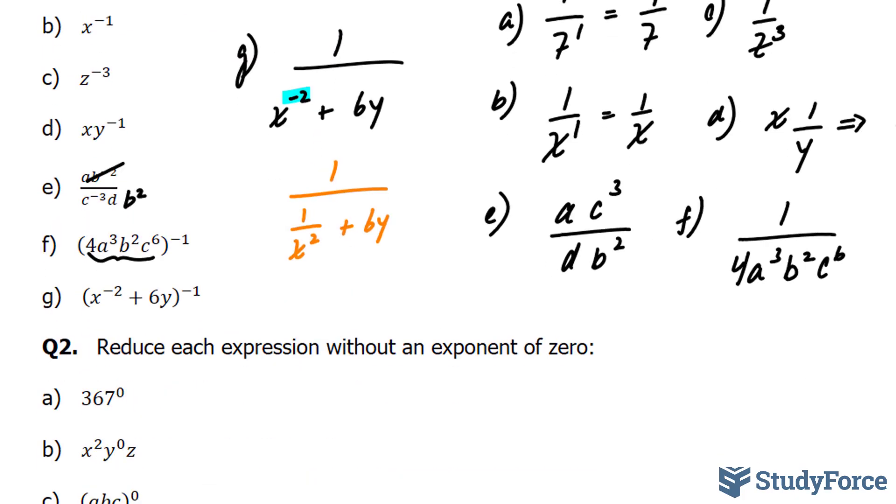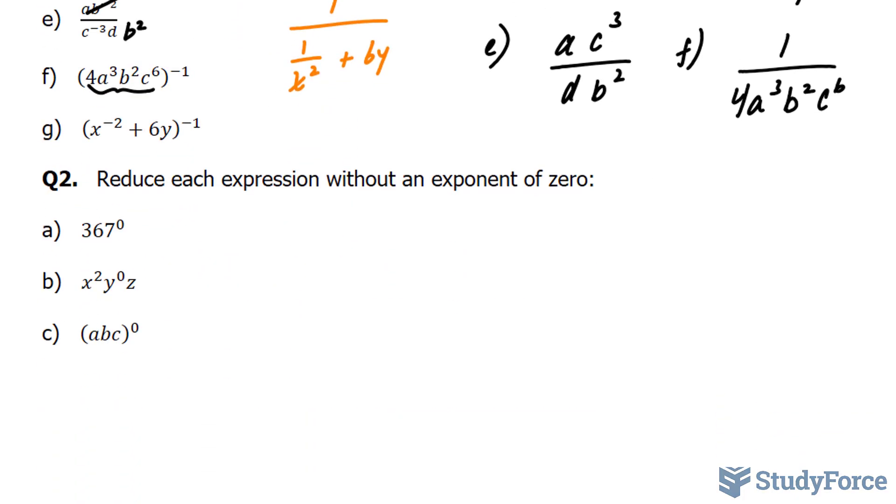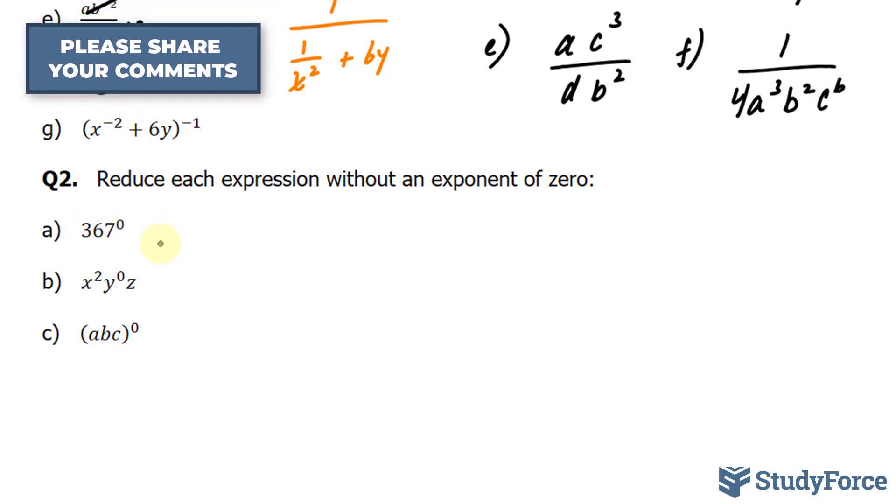Let's move on to question 2. In question 2, we work with zero exponents. The first one is 367 to the power of zero, and as mentioned above, anything to the power of zero is 1.